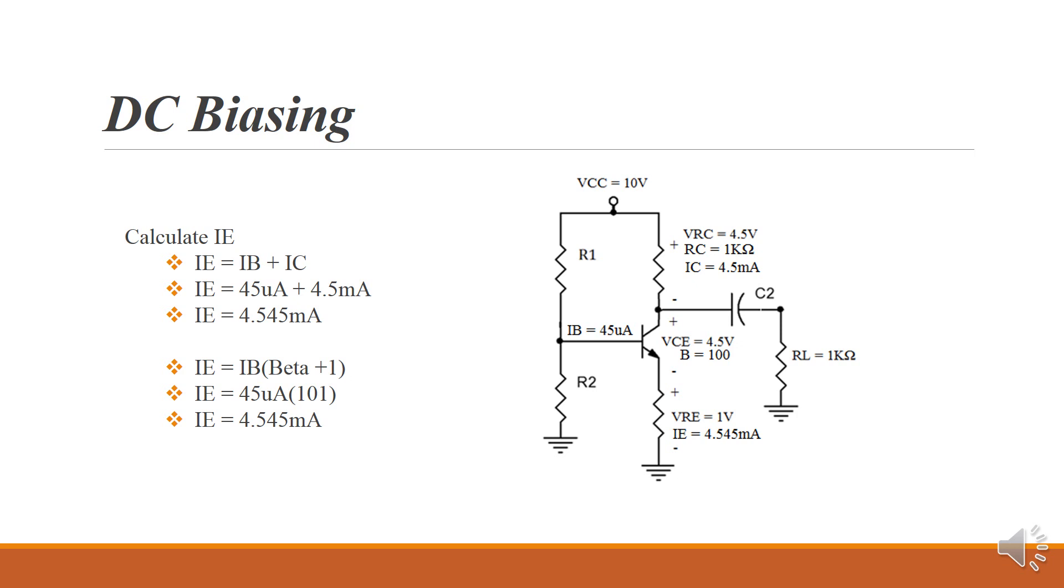In our example, we've got IE is equal to IB plus IC. So that's 45 microamps plus 4.5 milliamps equals 4.545 milliamps. And if we do 45 microamps times beta plus 1, 101, we also get the 4.545 milliamps for IE.